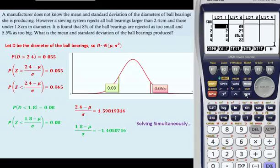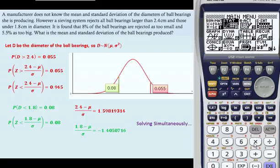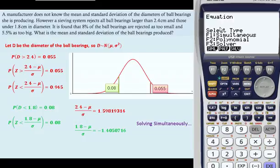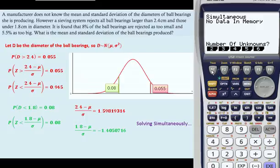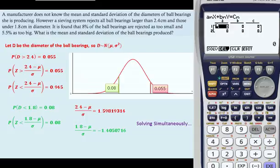We can also do that on our calculator using the equation part by going to simultaneous, which is F1. We have two sets of data. But it has to be in this form. So be a little bit careful what we type in here. We're going to say x is mu and y is sigma.